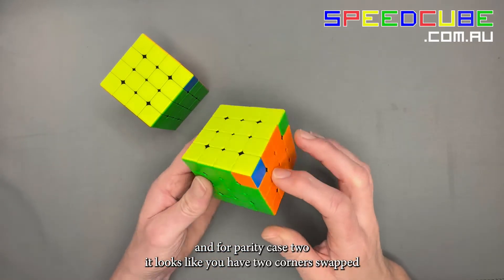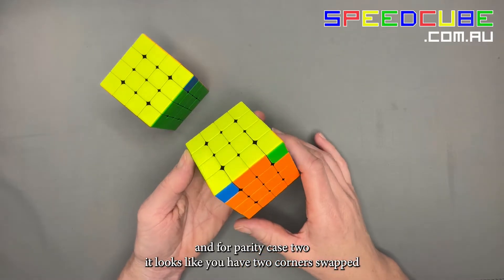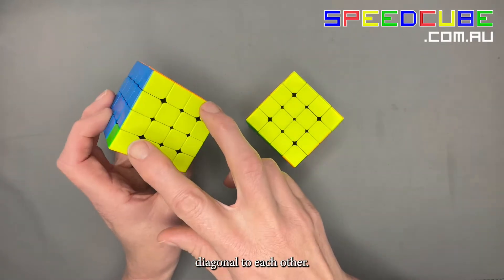And for parity case 2, it looks like you have two corners swapped diagonal to each other.